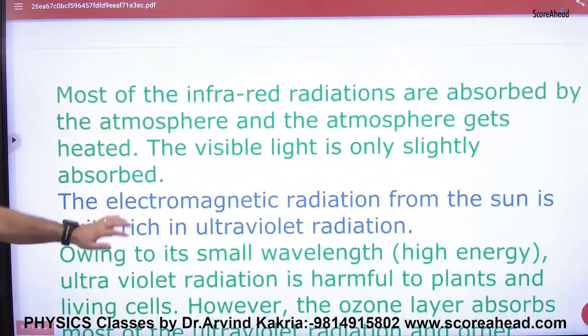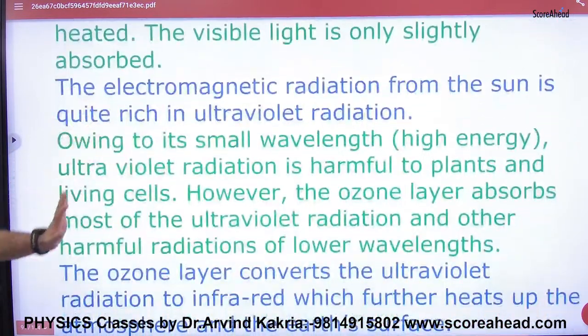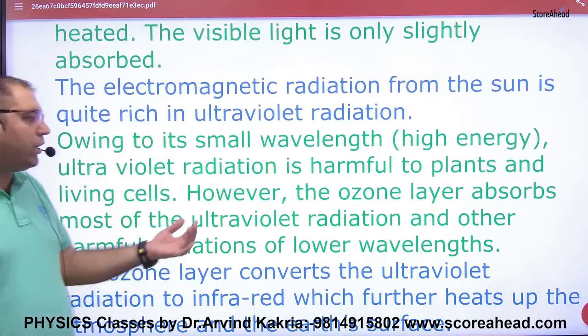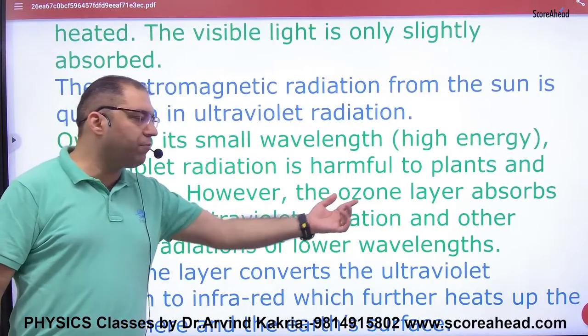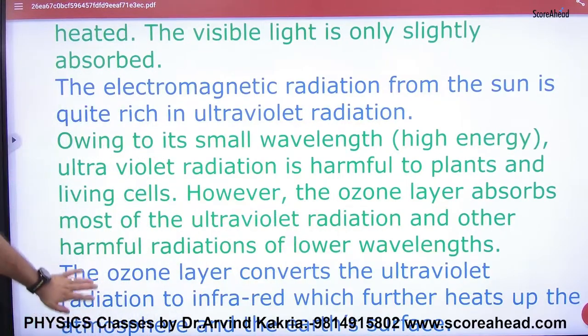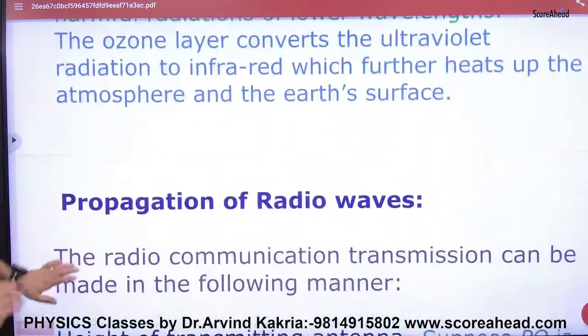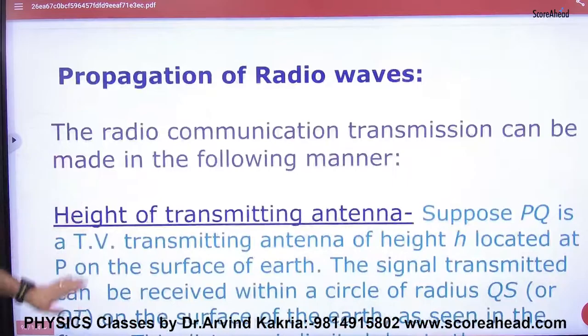Ultraviolet — what is known clearly is the so-called ultraviolet. The ozone layer absorbs ultraviolet radiation from the sun in this region of the atmosphere.